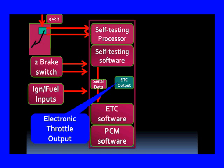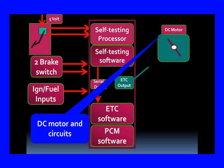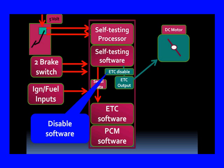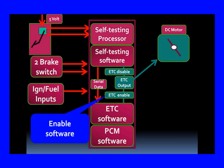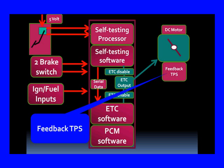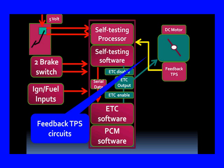Then we have the ETC outputs: a DC motor that we drive. We also have an ETC disabled signal — if something goes wrong in the self-testing software, it sends a signal saying we've got a problem: bring the car back to idle, do not let it come off idle, and it will disable the ETC. If everything is okay, it sends a signal back saying software is fine — use the feedback and gather the information. So we've got a processor doing nothing but continuously looking at the signals.